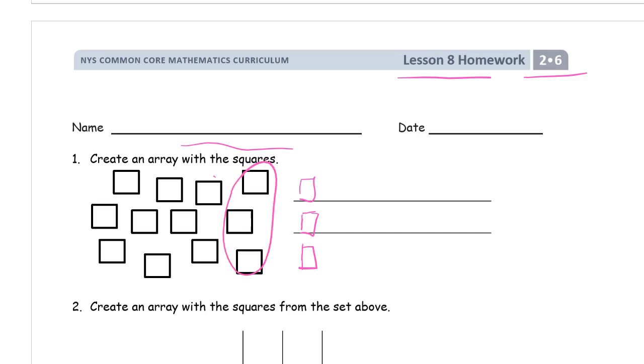So, how many columns can I have? 1, 2, 3, 4 columns. So it's going to be, and here's my fourth group of 3. There.